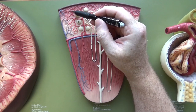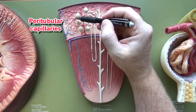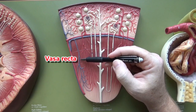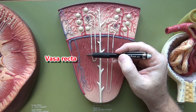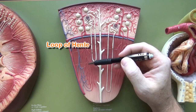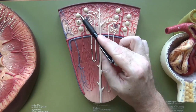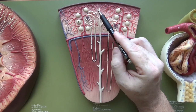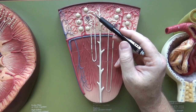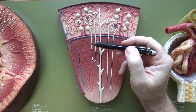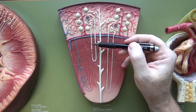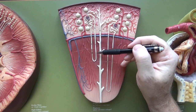These efferent arterioles are going to branch and form the peritubular capillaries. Here we have vasa recta, and on this side the venous portion. These vasa recta — straight vessels — are going to run adjacent to the loops of Henle, functioning like peritubular capillaries up here. The peritubular capillaries are located around the tubules and will reabsorb materials that the body wants to keep. That same thing will happen down here — the vasa recta will reabsorb materials the body wants to keep after they exit the loop of Henle.